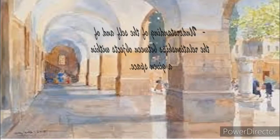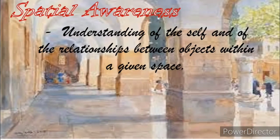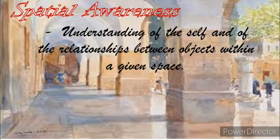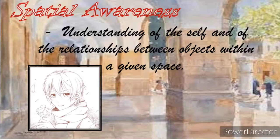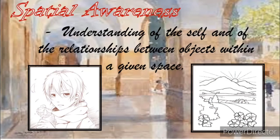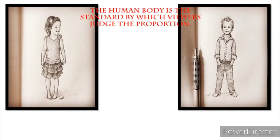Let's talk about an element of proportion. We have Spatial Awareness. Drawing an equally proportioned image is very tricky. To draw something life-sized on a sheet of paper is not very easy. That is why it is called Spatial Awareness — it is the understanding of the self and of the relationships between objects within a given space or area. The pictures show us how to put an object in a given space or area. The human body is the standard by which viewers judge proportion.